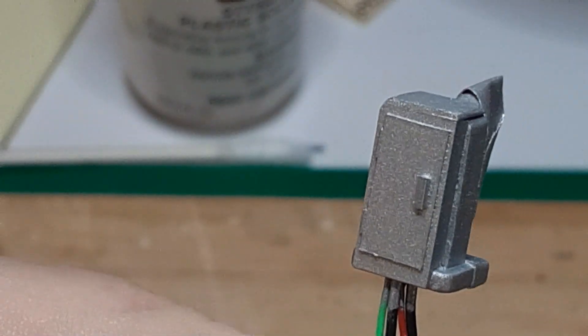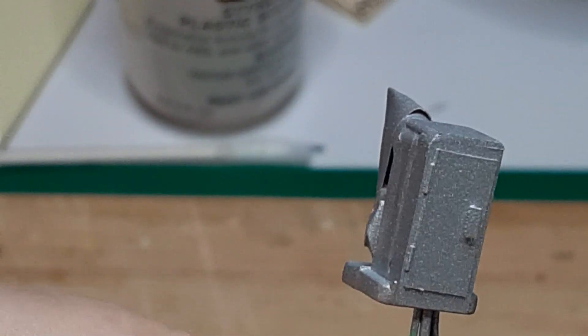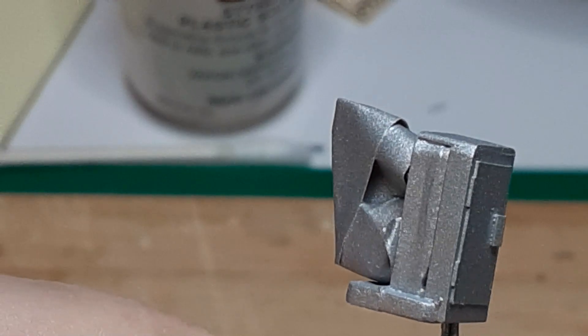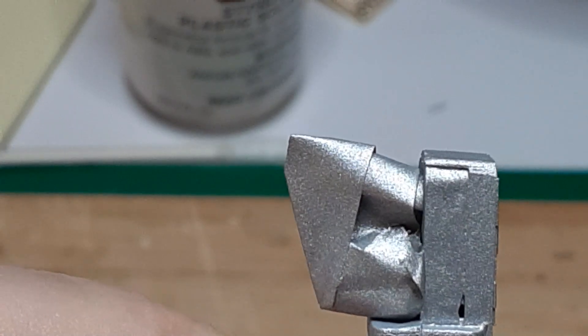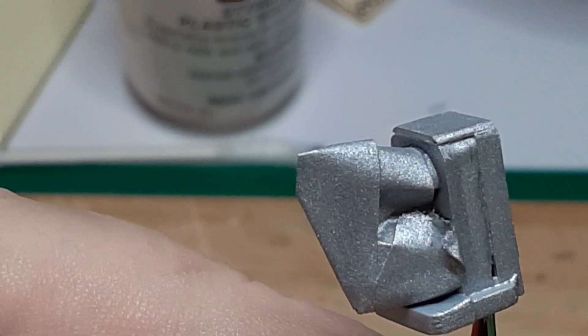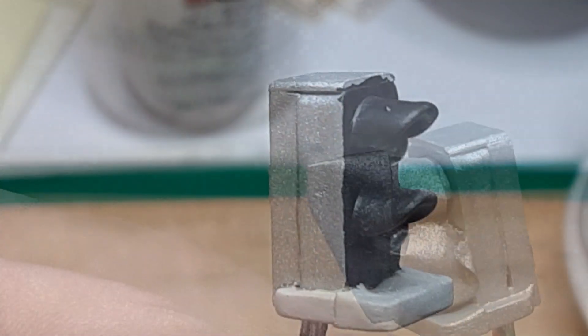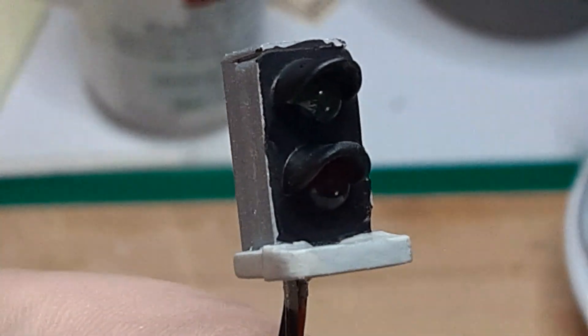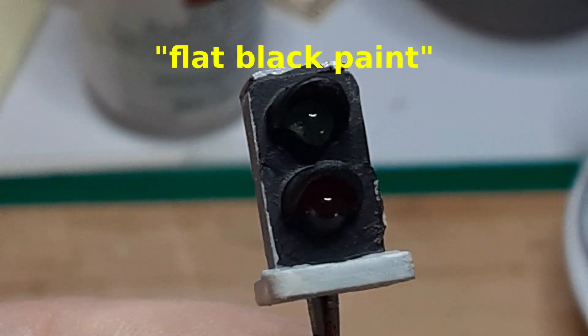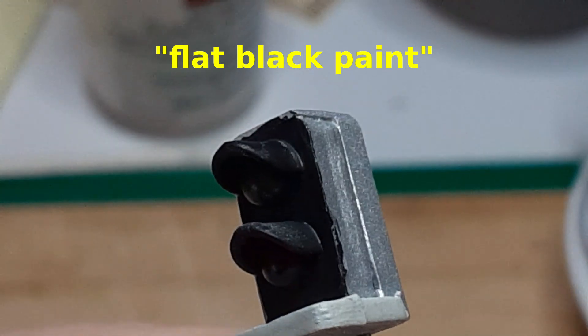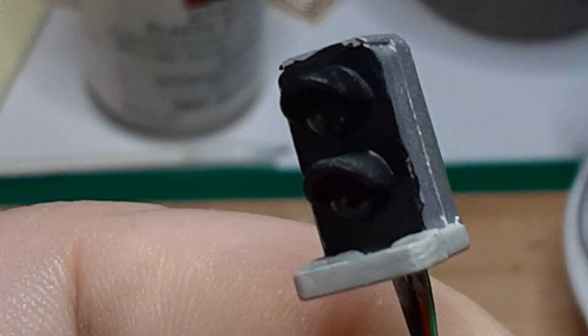Now it's time to paint. I mask off the front face of the signal, and prime and paint the other three sides and the top, an aluminum color. When the paint is cured, remove the masking tape, and touch up the front face with flat black paint. Also paint the exposed sides of the LEDs flat black.